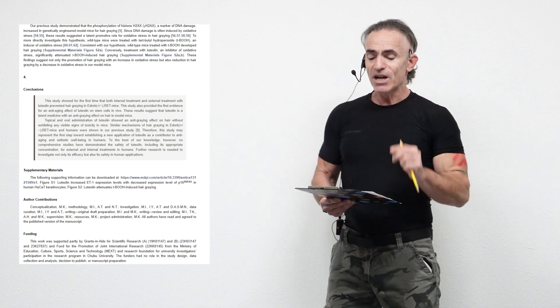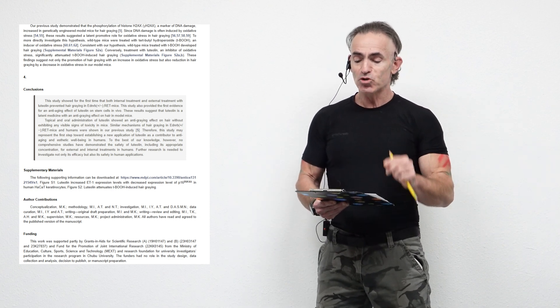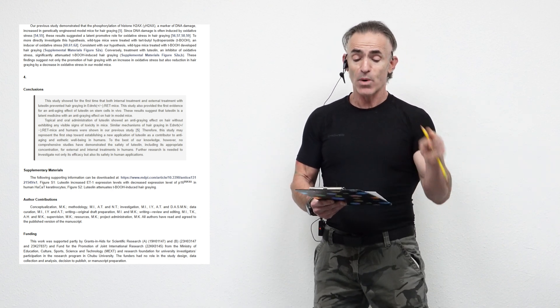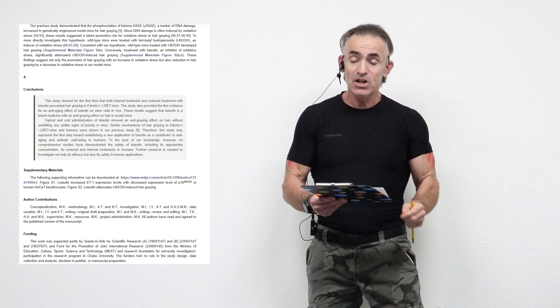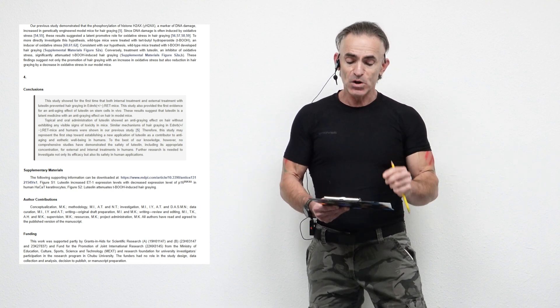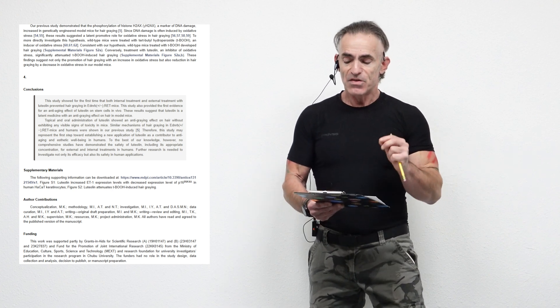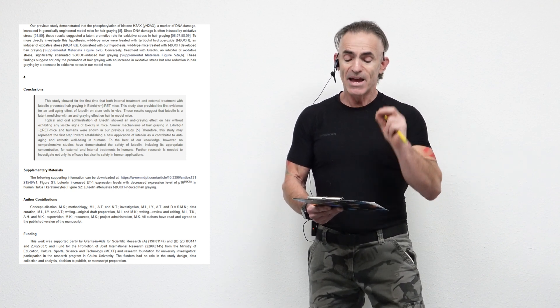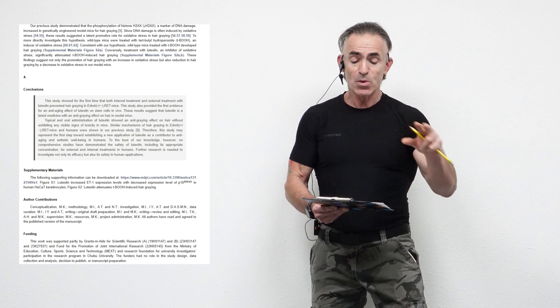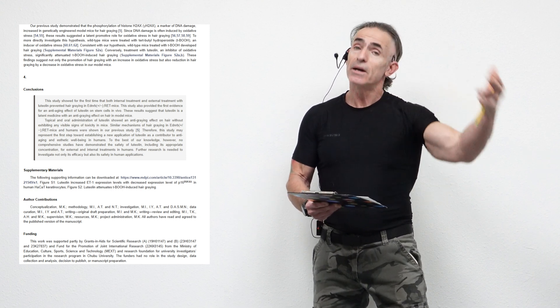The study showed for the first time that both internal treatment and external treatment with luteolin prevented hair graying in this group of mice. The study also provided the first evidence for an anti-aging effect of luteolin on stem cells in vivo. These results suggest that luteolin is a latent medicine with anti-graying effects on hair in an animal model.